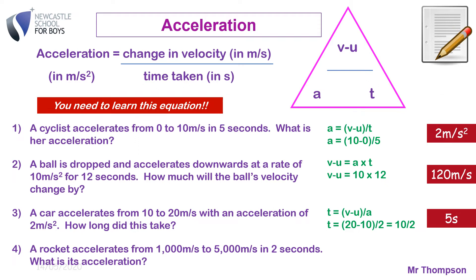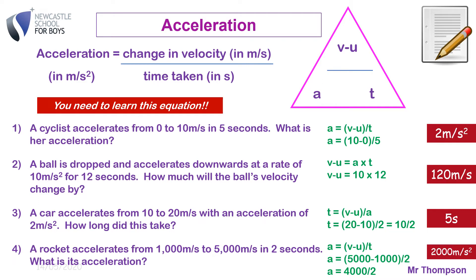Last one: a rocket accelerates from 1,000 meters per second to 5,000 meters per second in 2 seconds. What's its acceleration? Using the standard acceleration equation, the change in velocity is 4,000 because it goes from 1,000 to 5,000 in 2 seconds. So the answer is 2,000 meters per second squared. Please write these examples in your book and work through them yourself.